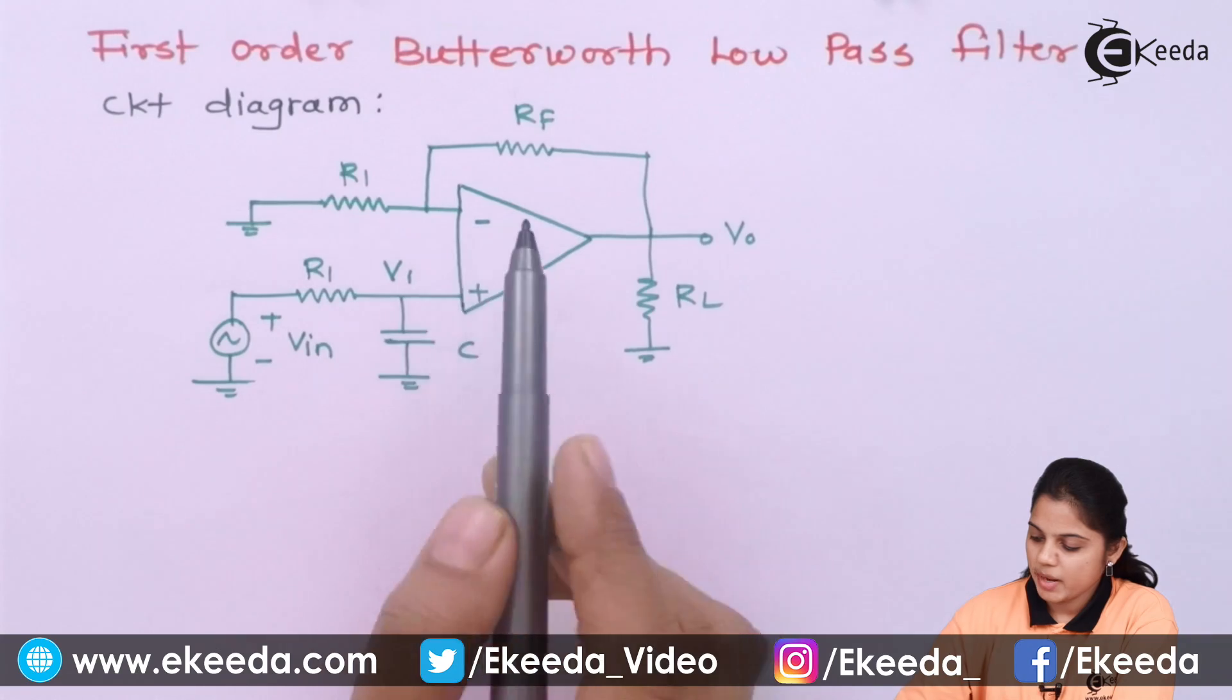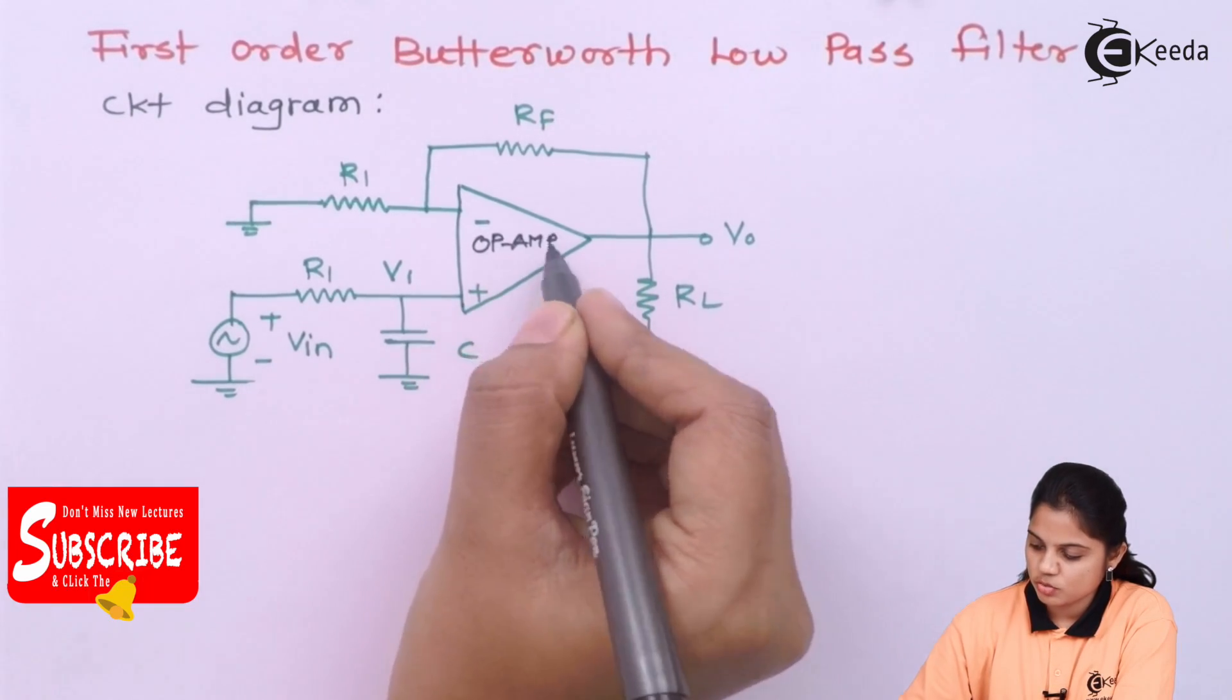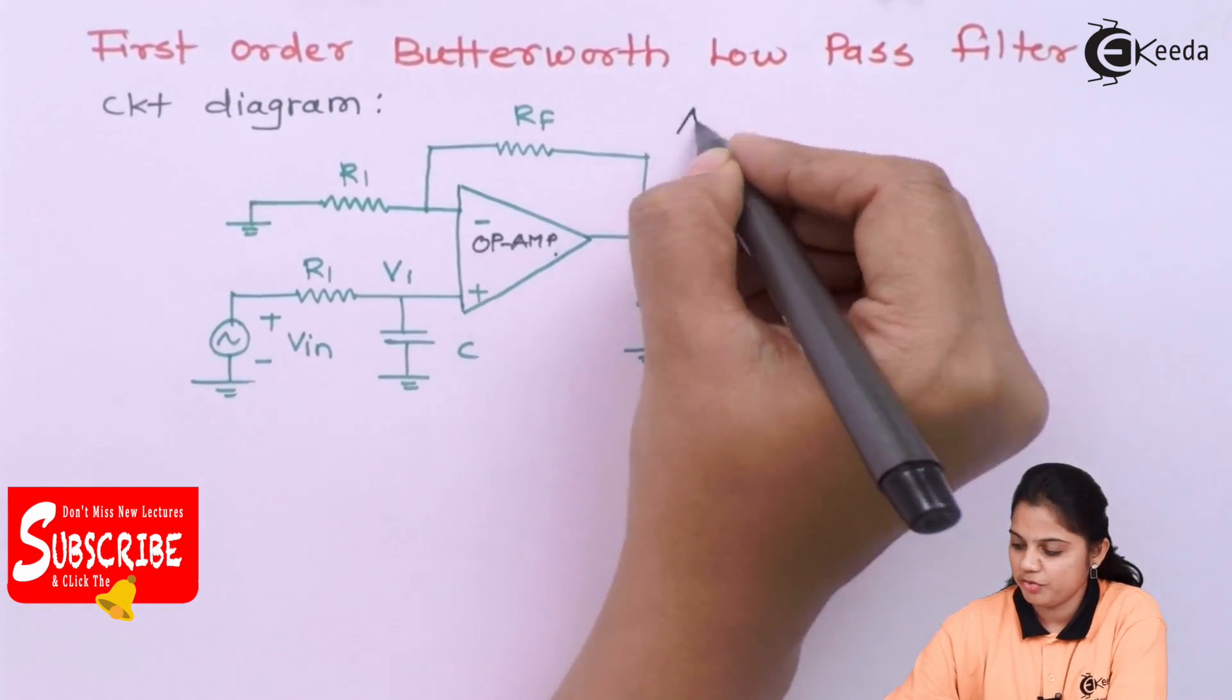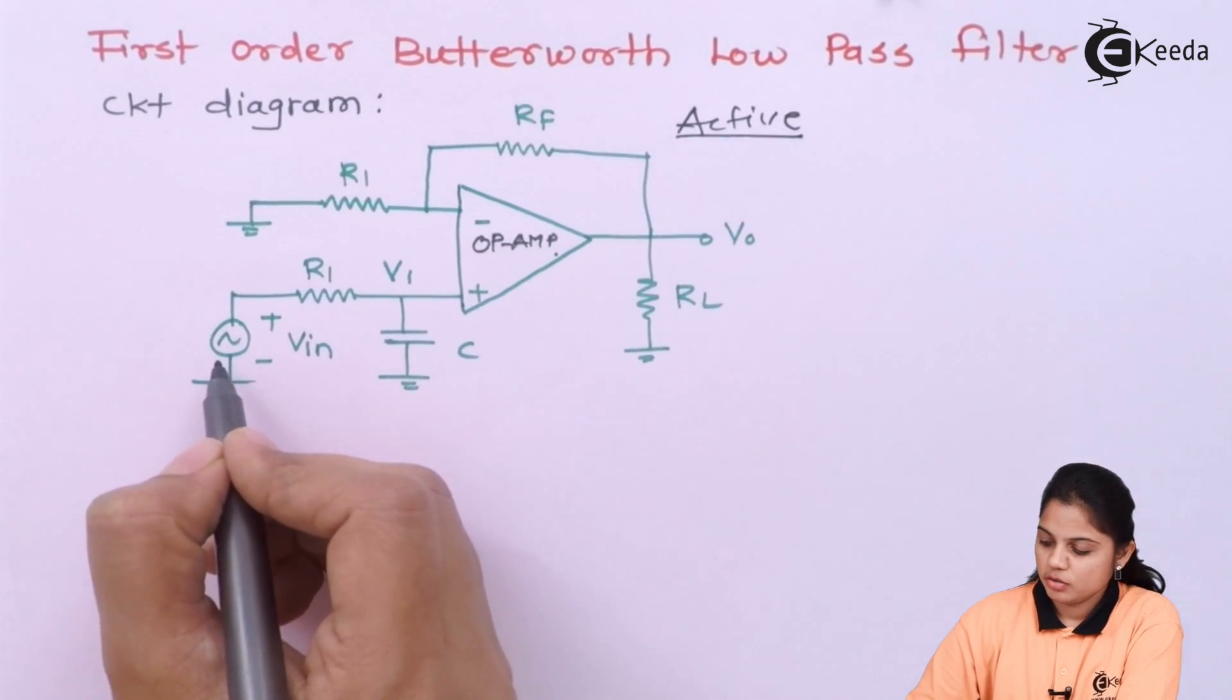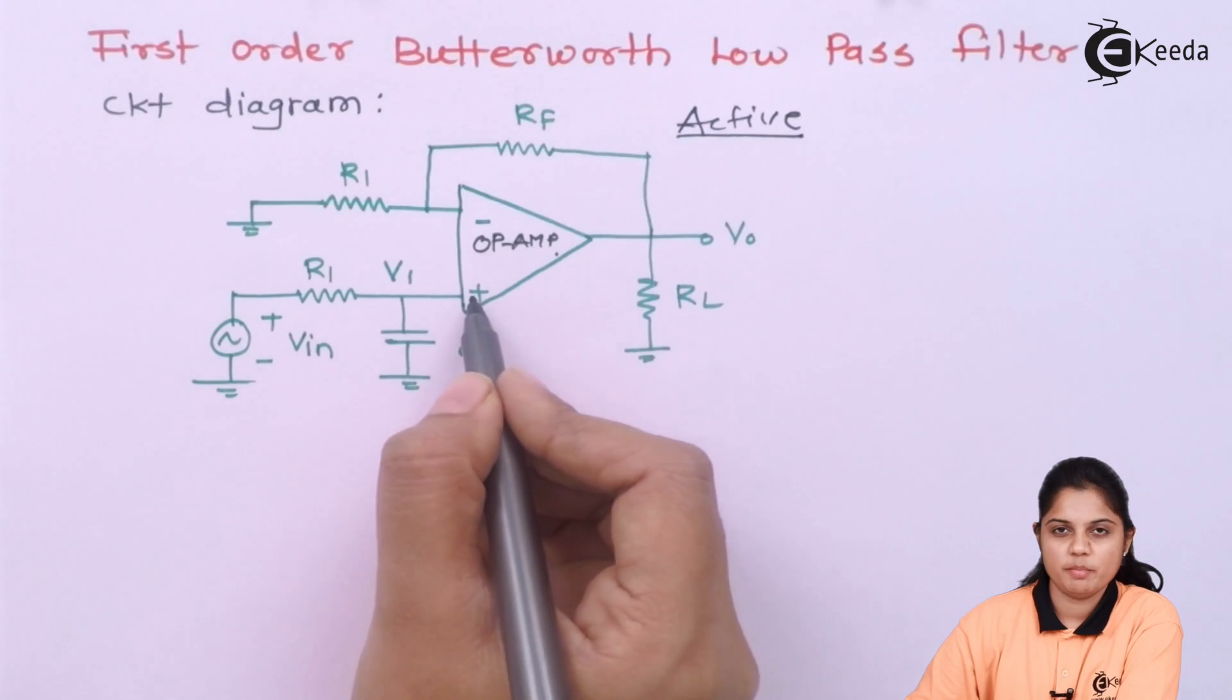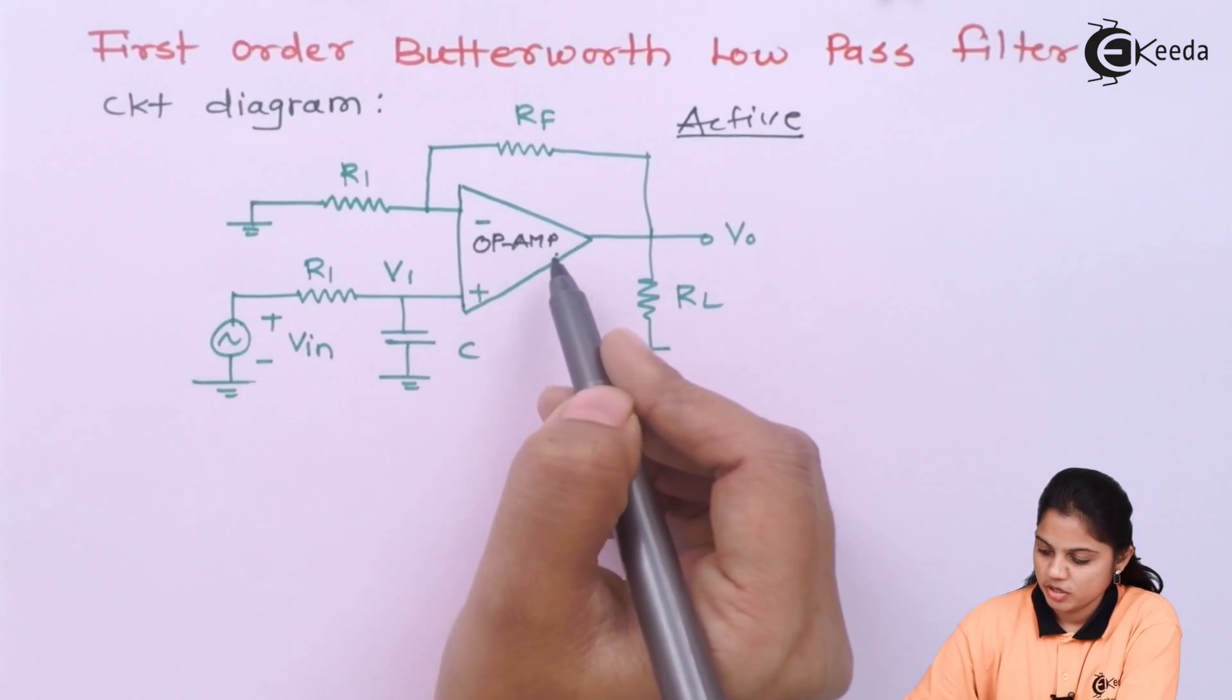Here you can see the op-amp which is used as an active component. Since op-amp is used, this is a type of active filter. Now, op-amp input voltage is given to the non-inverting terminal. That means the op-amp is in a non-inverting configuration.